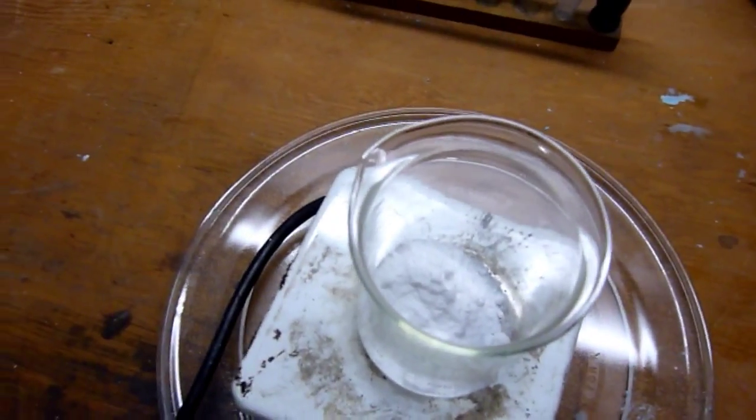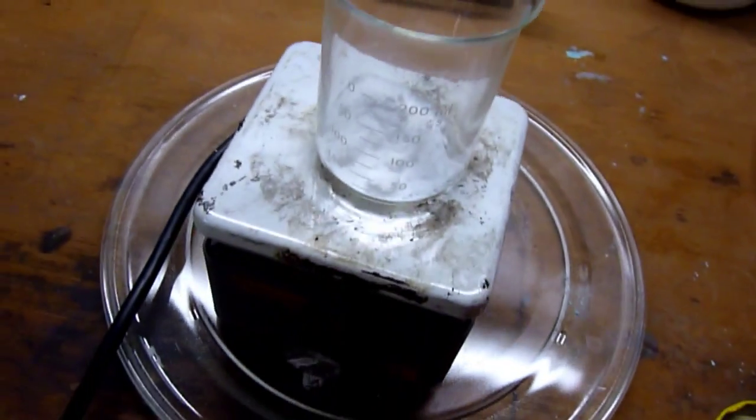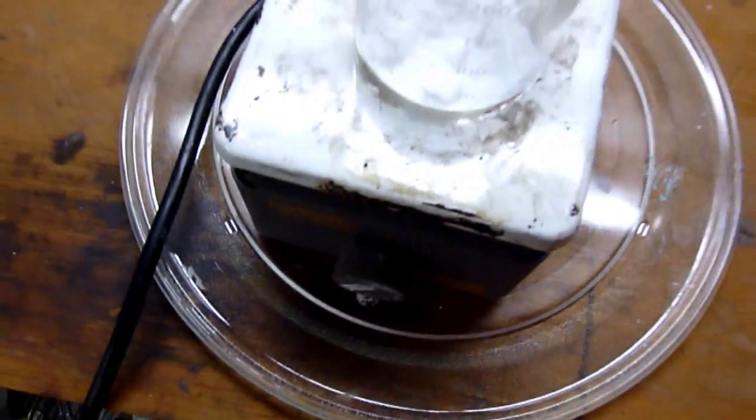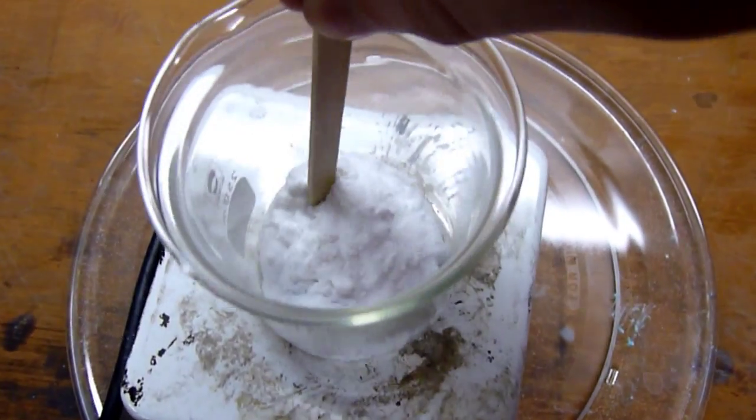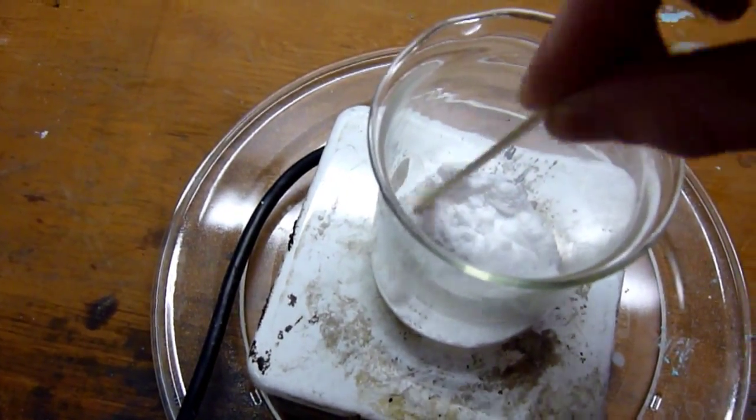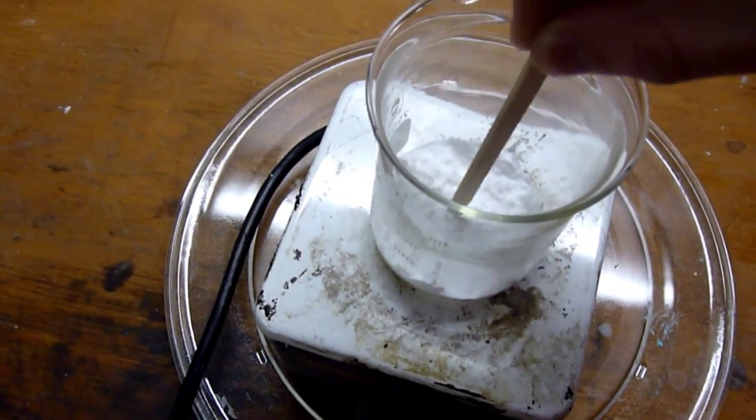However, sodium hydrogen carbonate can decompose at as low as 50 degrees Celsius. So, as long as you have the majority of it decomposed, you won't have that much of a carbon dioxide problem with your final product. So, as you can see here, we're losing some water. It's starting to get kind of sticky near the bottom.